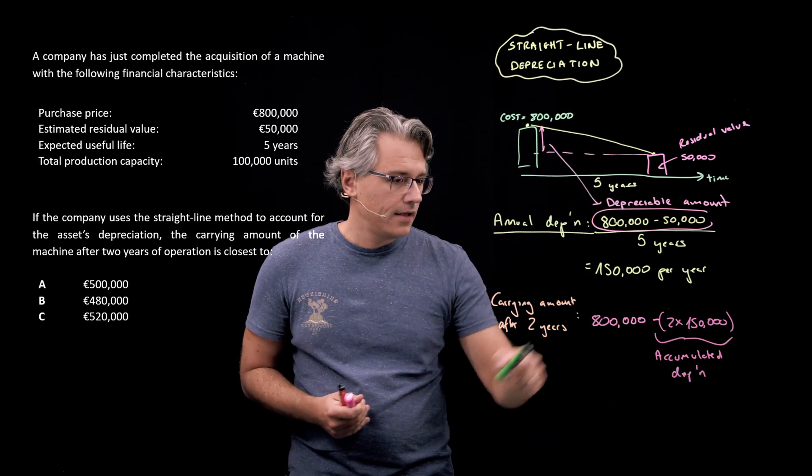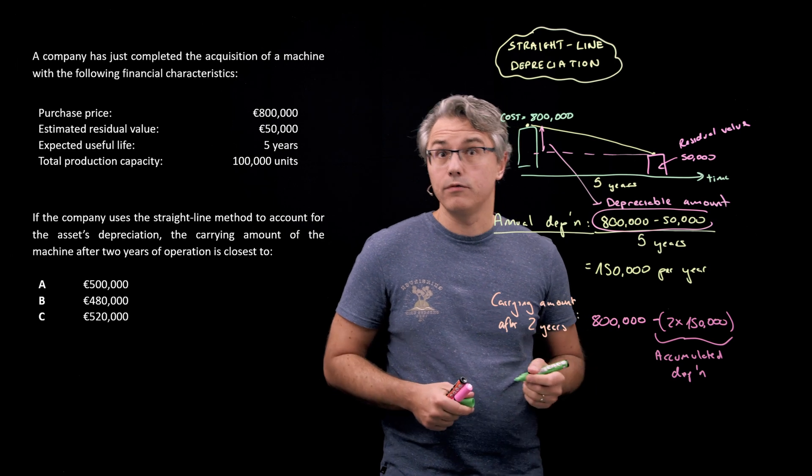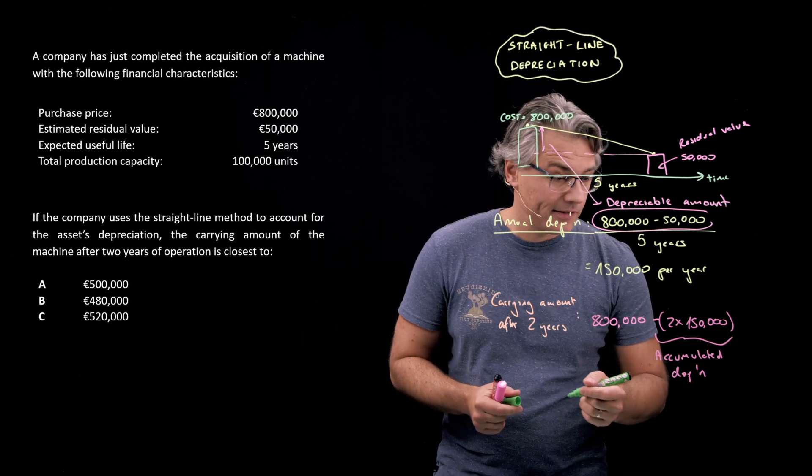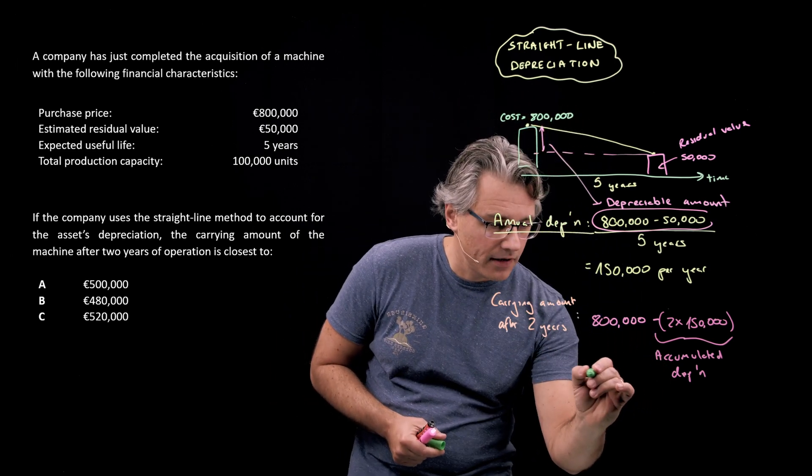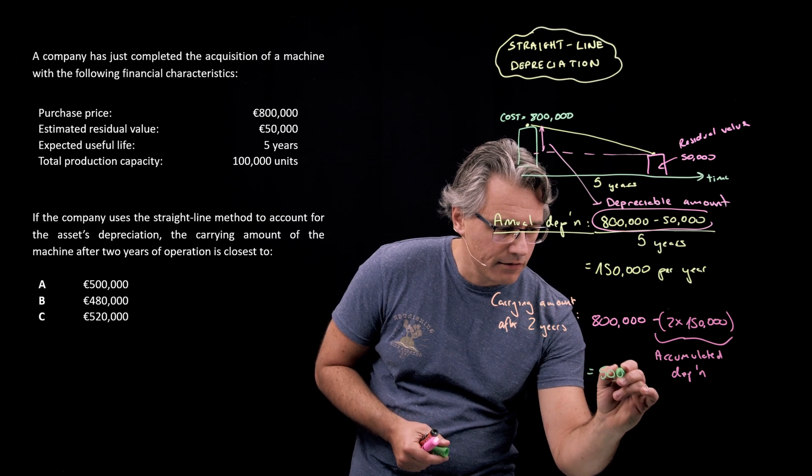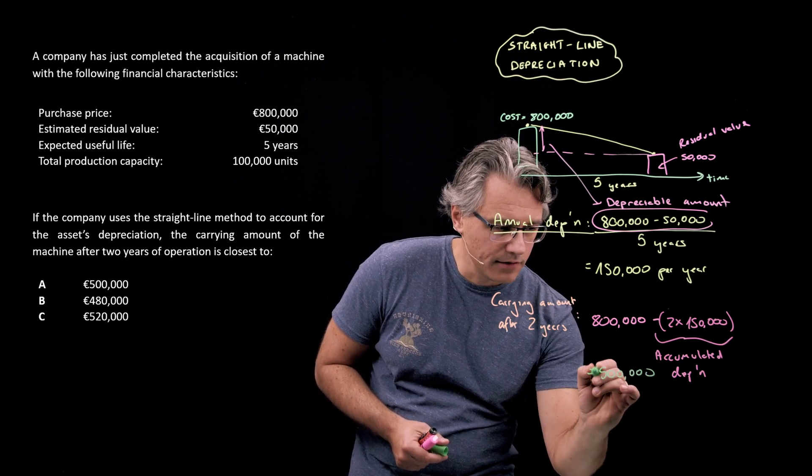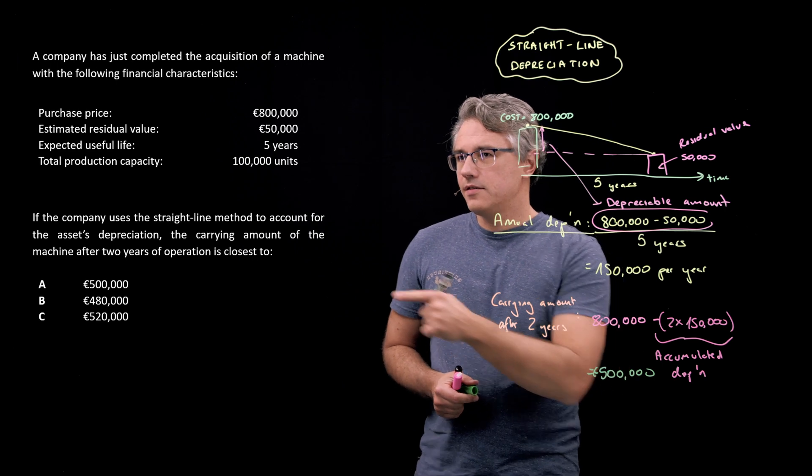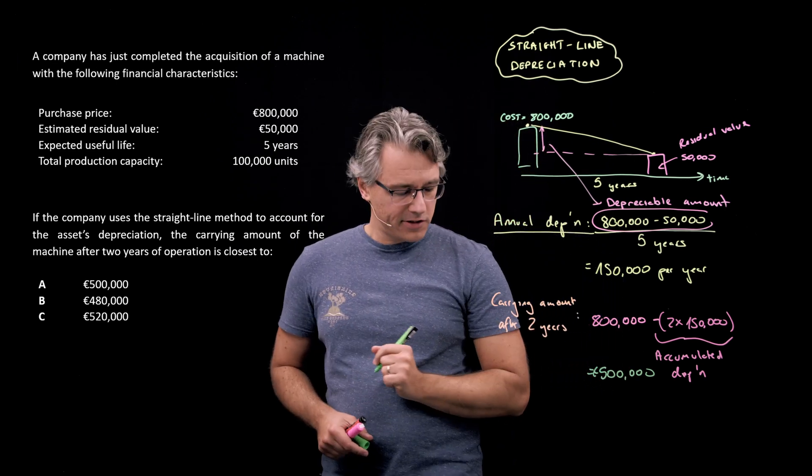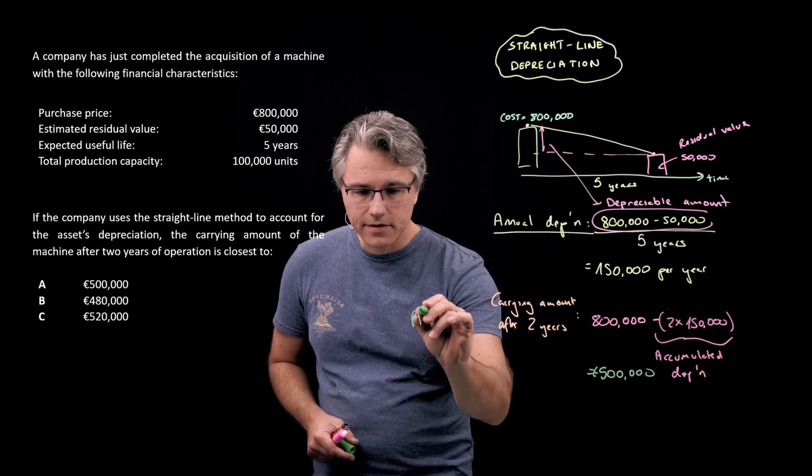That's going to be our accumulated depreciation for the two years, and this is very easy to compute. €800,000 minus two lots of €150, so effectively €300,000, will give a result of €500,000. And this, as you can see on the left hand side here, corresponds perfectly to answer A.